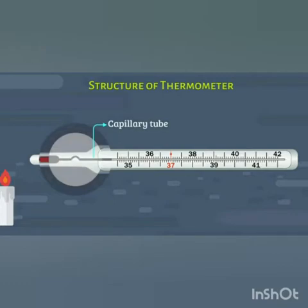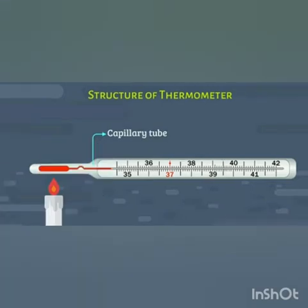A thermometer is based on the principle that liquids expand on heating. When the bulb of a thermometer is brought in contact with a hot object, the fluid inside the bulb expands and the mercury rises in the glass tube. This thin tube is also called the capillary tube.